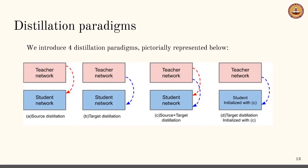We introduce four domain adaptive knowledge distillation paradigms. Case A represents distillation using only images from the source domain. Case B represents distillation using only images from the target domain. Case C represents source plus target distillation — the complete model as proposed. Case D represents target distillation where the student network is initialized with weights trained as in Case C.